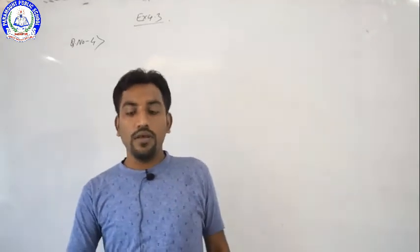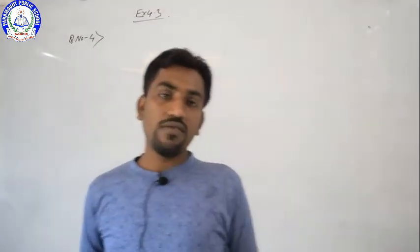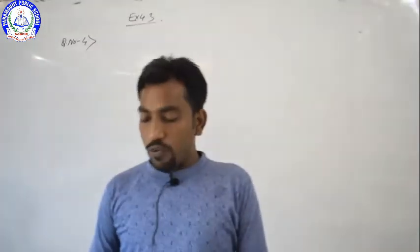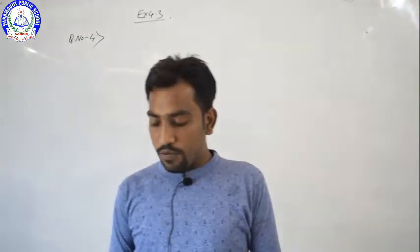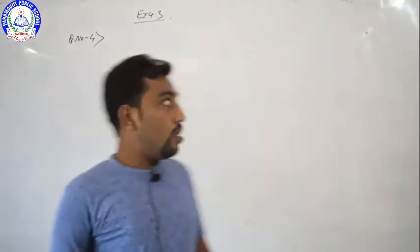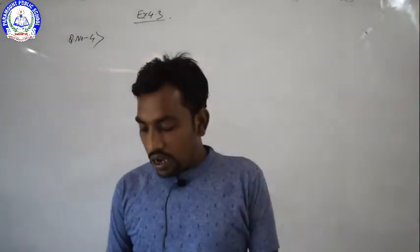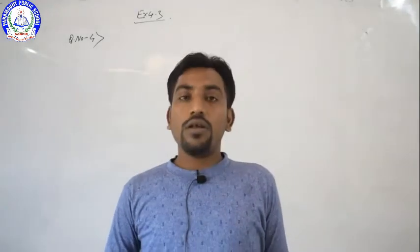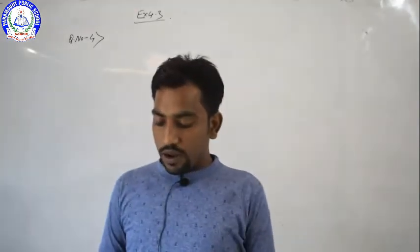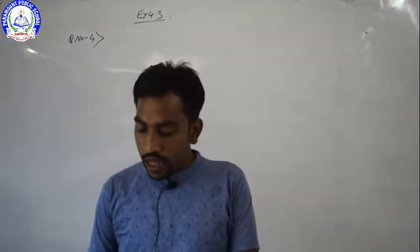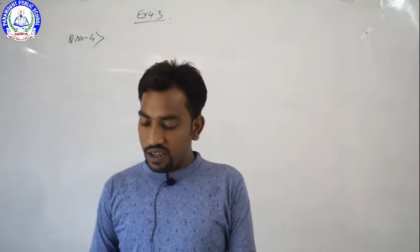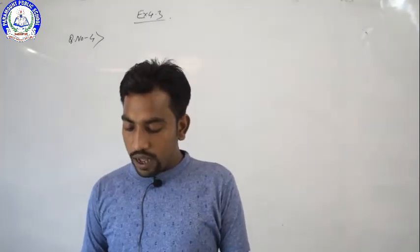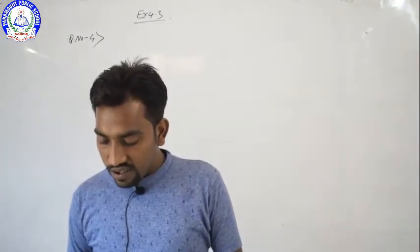Hello students, welcome back to the mathematics class. Today we are studying Exercise 4.3 remaining questions, starting from question number 4. The question reads: the sum of the reciprocal of Rahman's age 3 years ago and 5 years from now is 1 by 3. Find his present age.